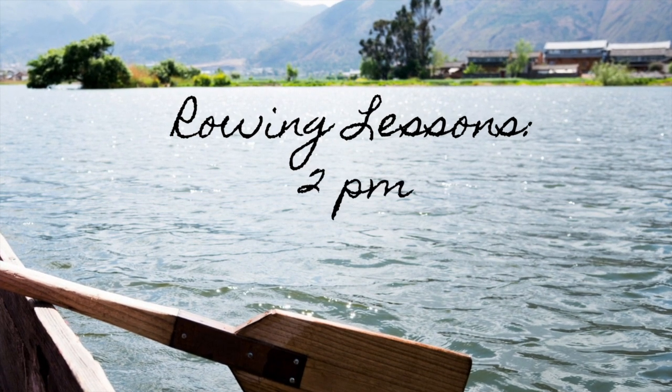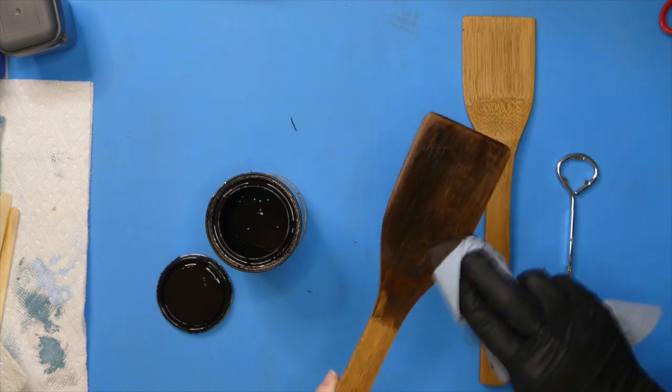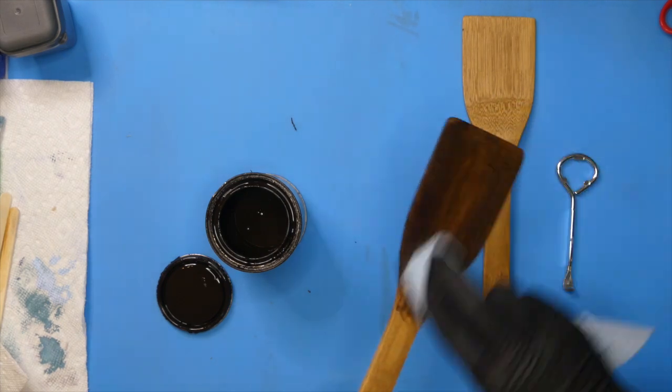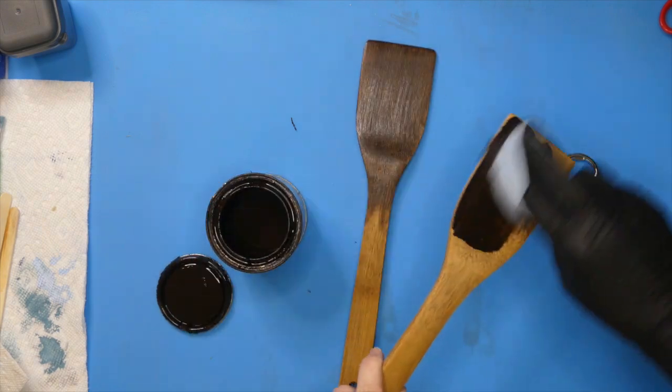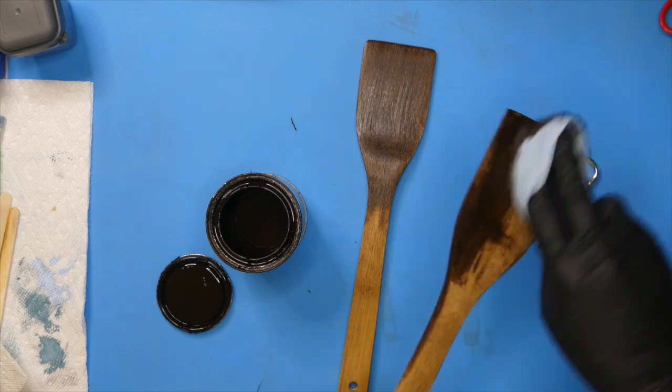The second project we're making is oars. I got these bamboo turners from Dollar Tree and I'm staining them using Varathane stain in Kona, giving them one coat all around, front and back.